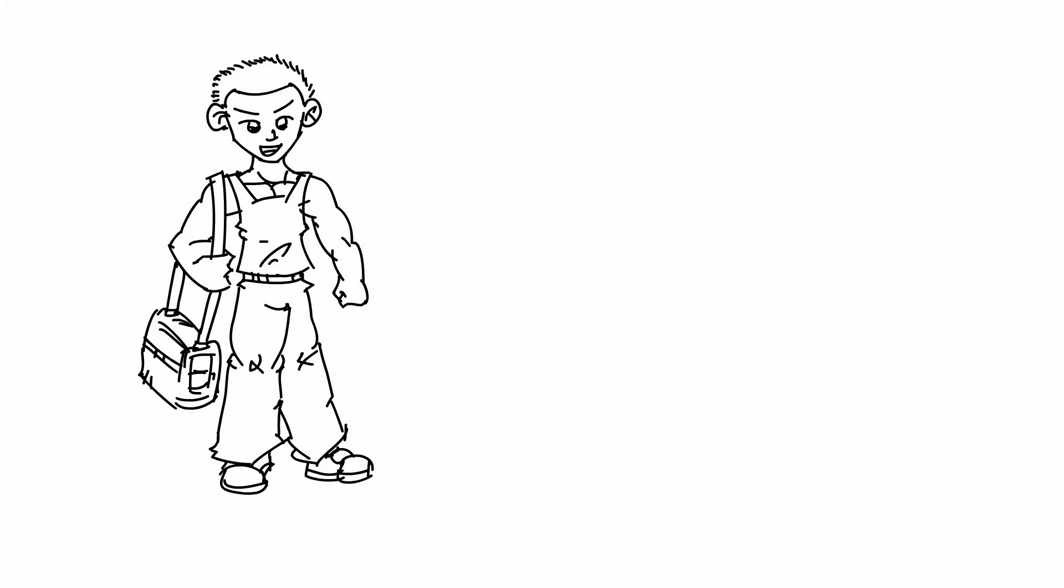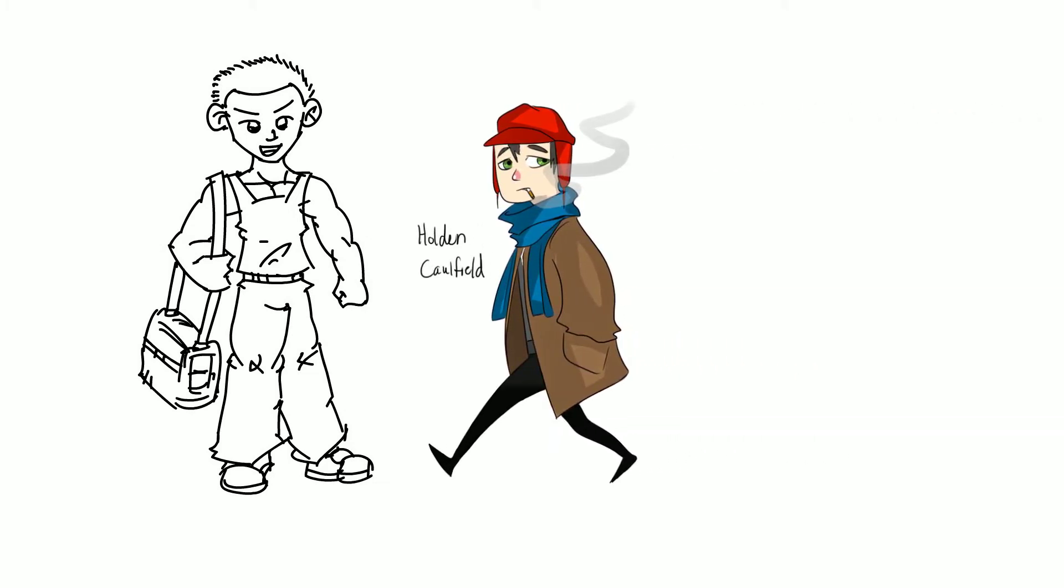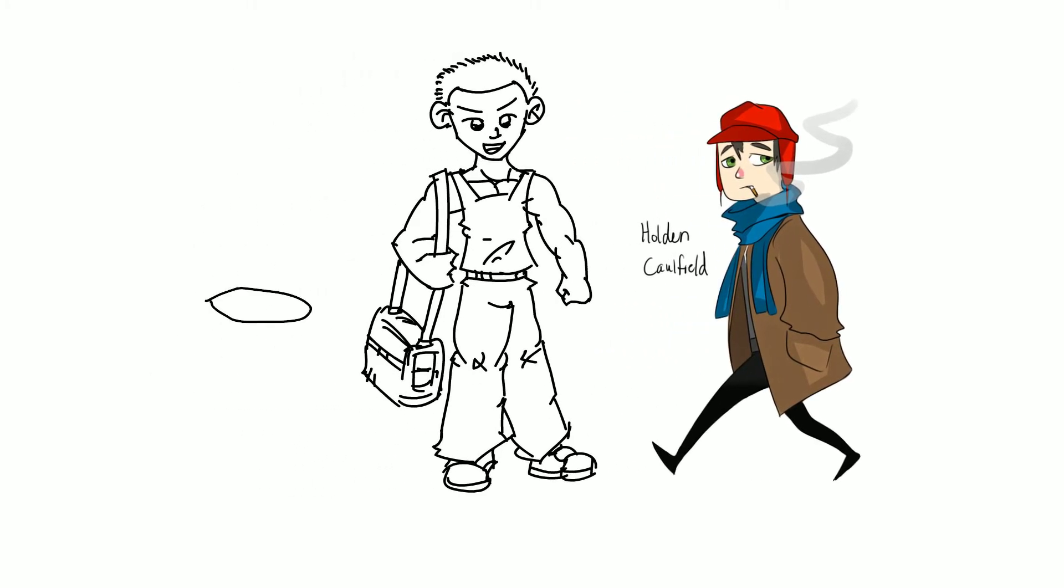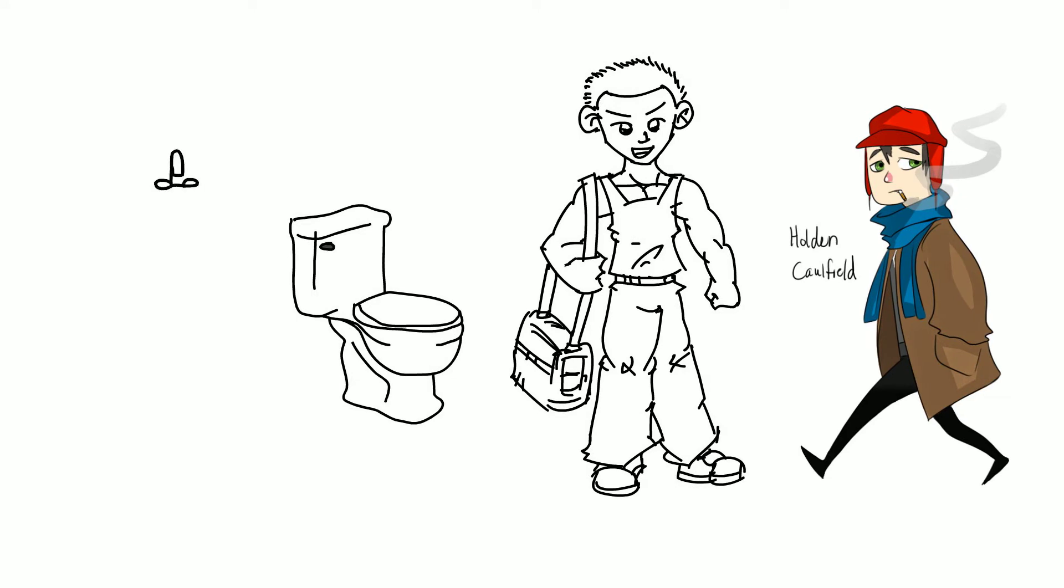Holden claims he doesn't have anything else to do, but clearly he's excited by Stradlater and wants to be near him, unlike Ackley, who he wants to avoid. Holden admits Stradlater is handsome in a yearbook kind of way, but he notices that Stradlater is actually a secret slob. His razor is dirty, full of rust and hair.